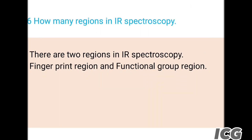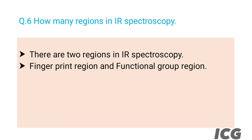The next question is: how many regions are in IR spectroscopy? The answer is there are two regions in IR spectroscopy. The first one is the fingerprint region and the second one is the functional group region.